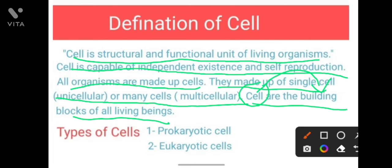So to repeat: what is the cell? It is our structural and functional unit of a living organism. It can independently exist and shows self-reproduction — cells divide and new cells are formed. All organisms are made from cells; they will be unicellular or multicellular. Now let's talk about cell types.